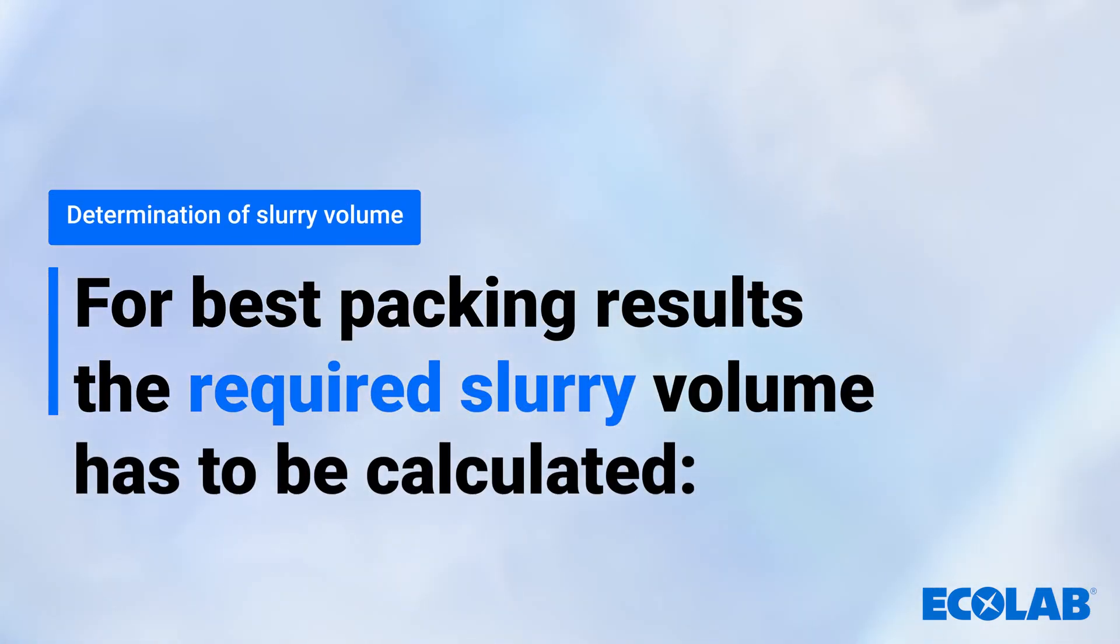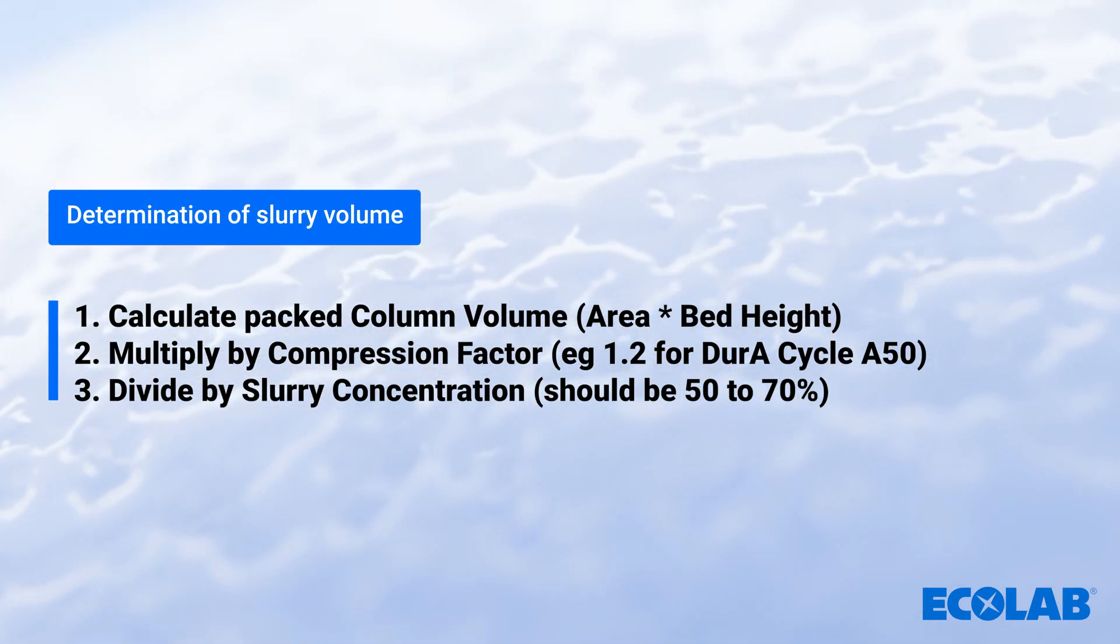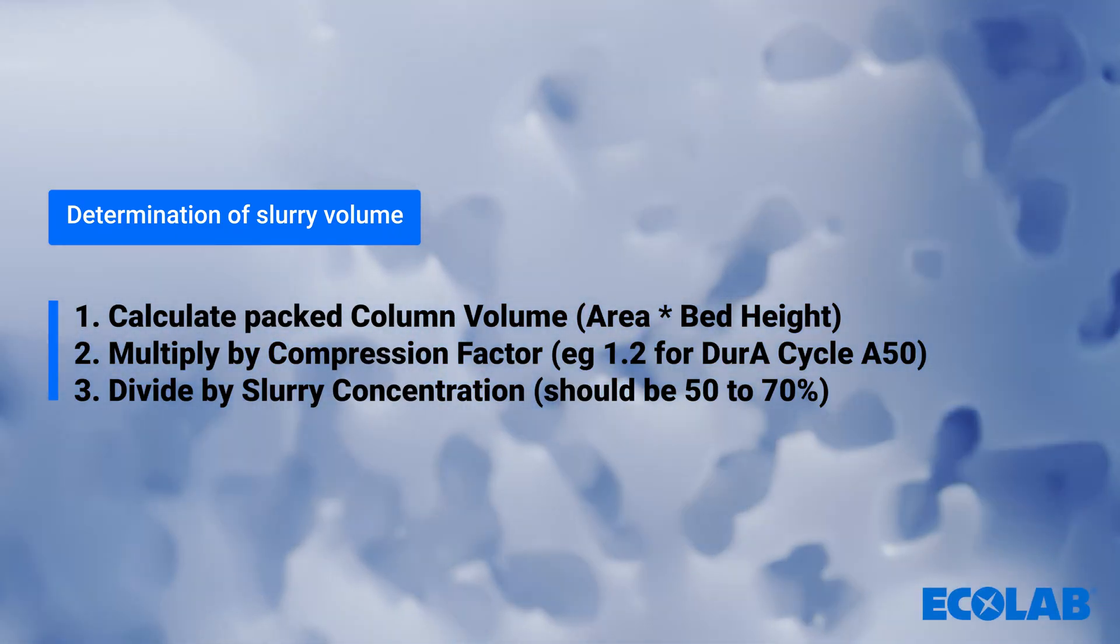Once the slurry concentration has been calculated, this is then used to calculate the required slurry volume. The column volume is multiplied by the compression factor, and this is divided by the slurry concentration.